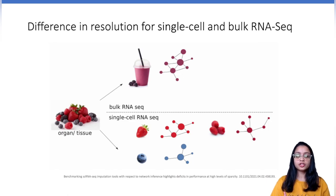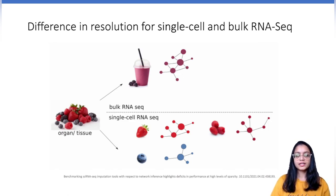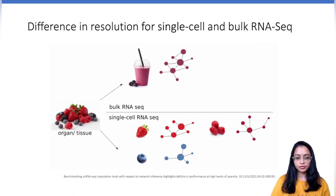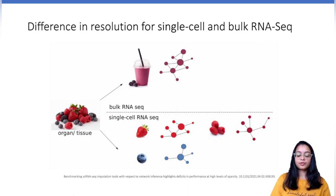The source material can be the tissue that you want to study. This source material is processed and what we get is gene quantifications or gene expression values, and these gene expression values are averaged across all the cells — very much like the smoothie where we have the taste of all the fruits.